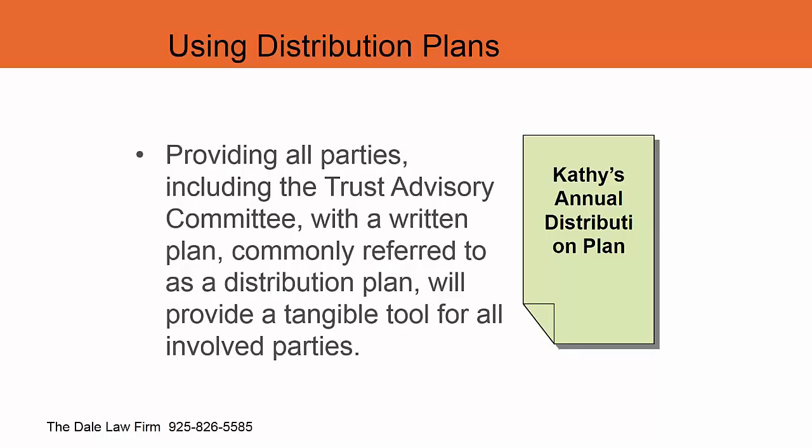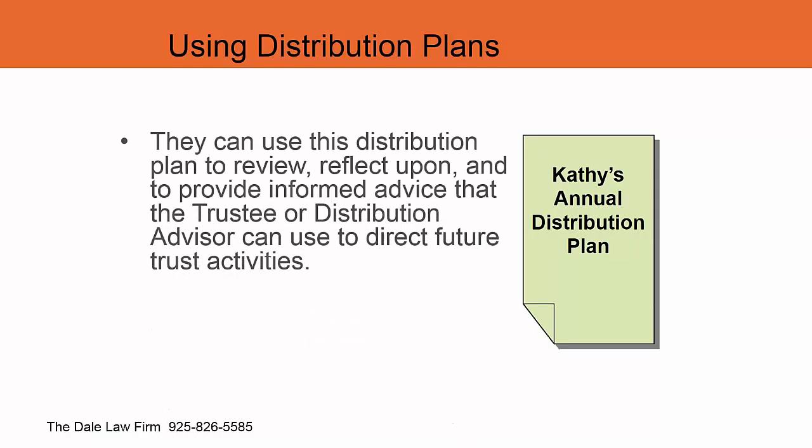What we basically do is put the plan — the budget — together and run it past the advisory committee or the trust protector. Once the plan is put together, the advisory committee or trust protectors have pre-authorized the trustee or trust advisor to carry out that plan. For our trust advisory committees, this is the primary job they have — to use the distribution plan to review, reflect upon, and provide informed advice that the trustee or distribution advisor can use to direct future trust activities.